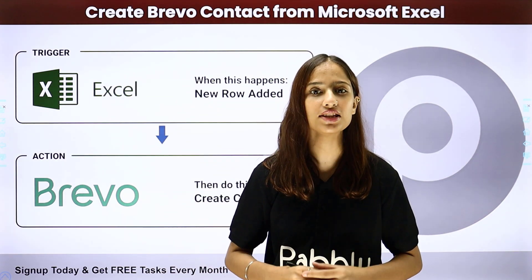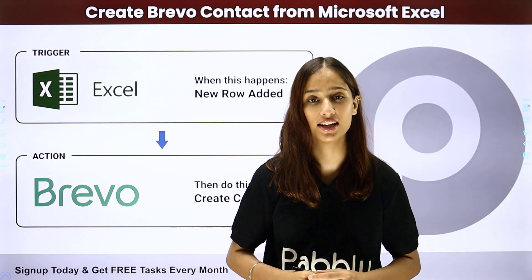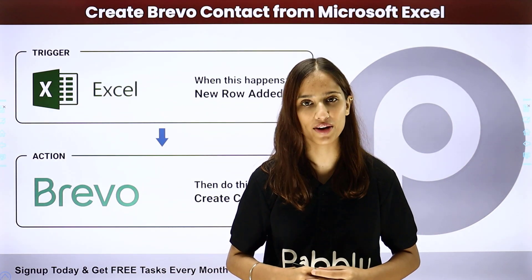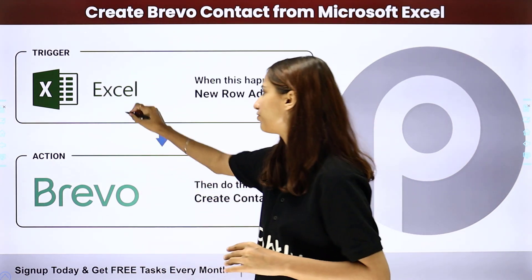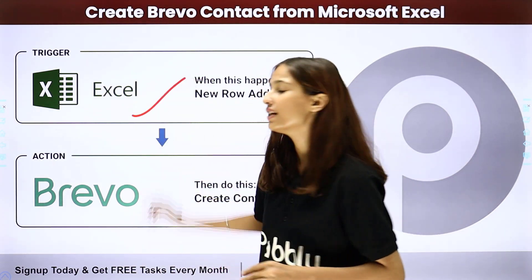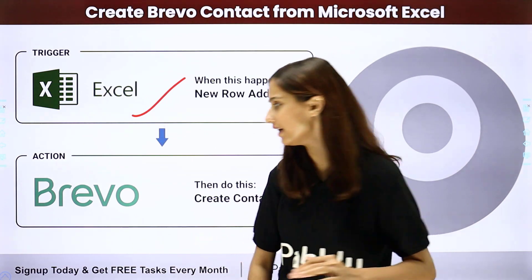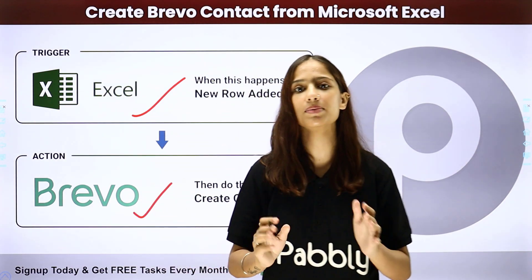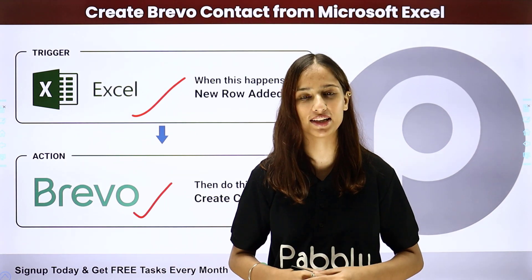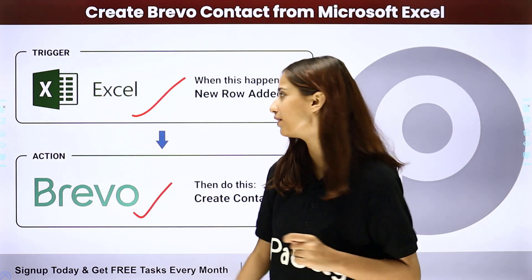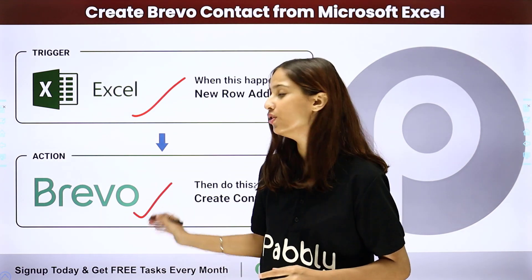Let's suppose that you manage the data of your leads in a Microsoft Excel file, which you wish to import to Brevo. Whenever a new row is added in your Microsoft Excel sheet, you want to automatically create it as a contact in Brevo with the same details. For this automation, we will be using Pabbly Connect, where the trigger application will be Microsoft Excel and the action application will be Brevo.